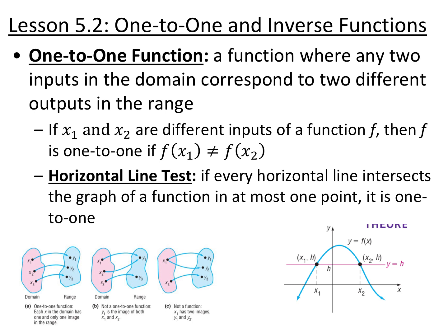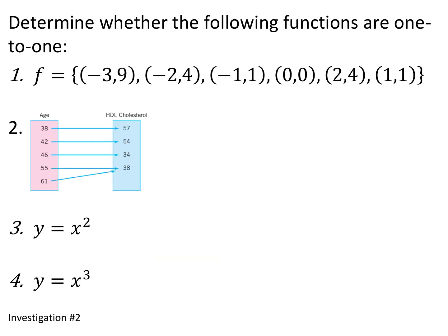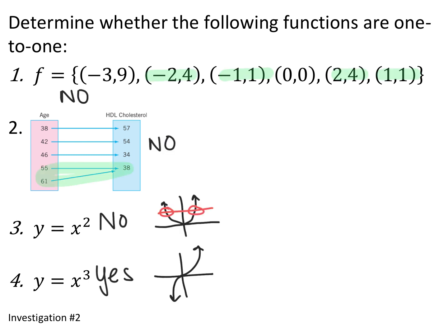Here's an example: this graph would pass the vertical line test as a function, but it would not pass the horizontal line test, so it's not a 1-to-1 function. Looking at four examples — the first is not a 1-to-1 function because both negative 2 and positive 2 have the same output of 4, and negative 1 and positive 1 both have the same output of 1, so one y-coordinate has two different x's. Number 2 is also not a 1-to-1 function: both 55 and 61 correspond to the same output. y equals x squared is also not a 1-to-1 function because it does not pass the horizontal line test — there are an infinite number of y-coordinates that have more than one x-coordinate.